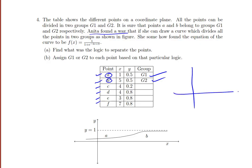Point A is (1, 0.5), B is (5, 0.5) somewhere here. C is (4, 0.2), D is (4, 0.8), E is approximately (3, 0.8) — so three and point eight will be here — and F is (7, something), which would be here somewhere. Now we need to categorize in which group each point lies.